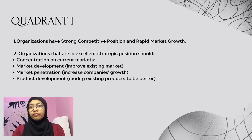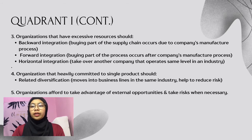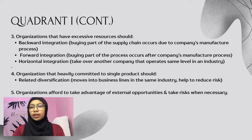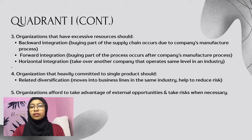It is unwise for a quadrant one firm to shift notably from its established competitive advantage. When a quadrant one organization has excessive resources, backward, forward, or horizontal integration may be effective strategies. When a quadrant one firm is too heavily committed to a single product, related diversification may reduce the risk associated with a narrow product line. Quadrant one firms can afford to take advantage of external opportunities aggressively when necessary.